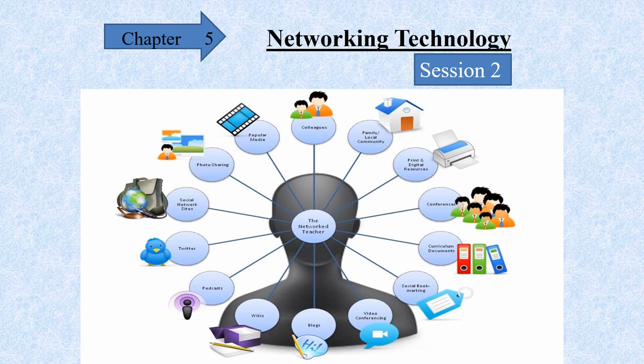Chapter number 5, that is Networking Technology. We have already seen session one on Networking Technology, so let us revise very fast what we studied. We started with Computer Networking, then we saw different types: LAN, WAN, and MAN. Next we covered Network Topology — Bus Topology, Ring Topology, and Star Topology — in detail with their advantages, disadvantages, and applications.